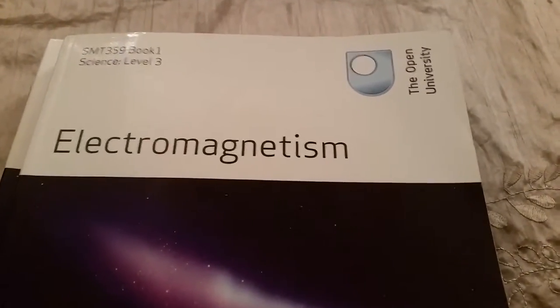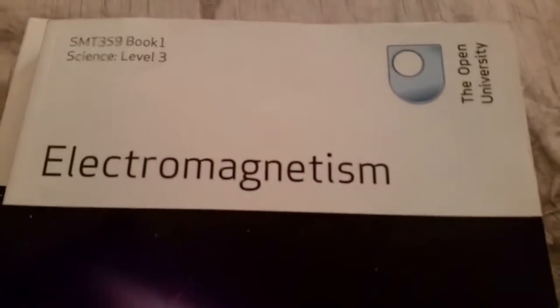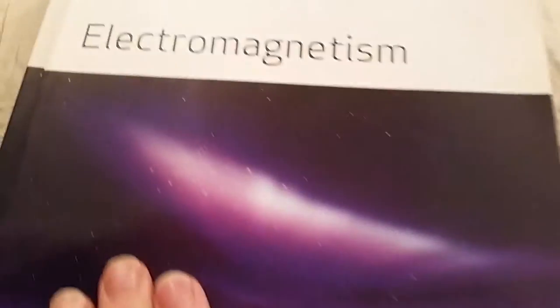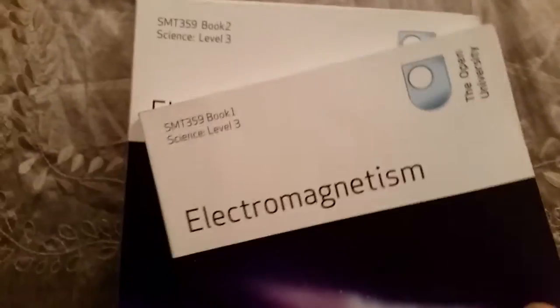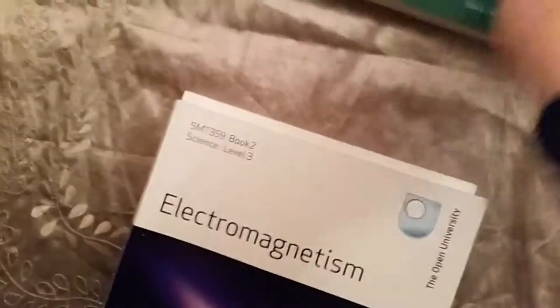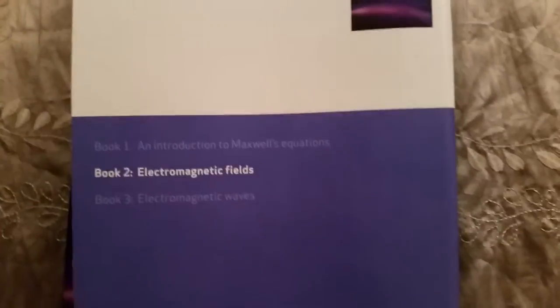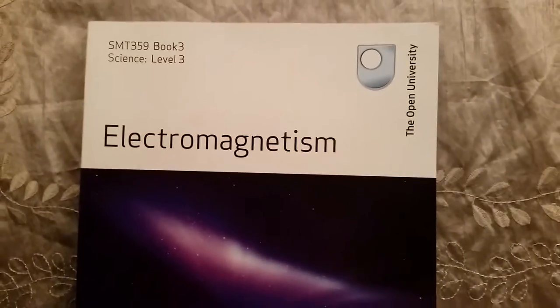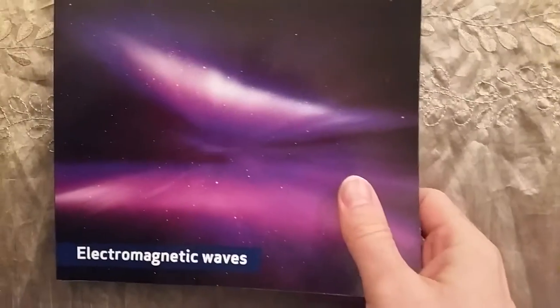This is a brief review of SMT359, which is the electromagnetism course at the OU. It comes with three books. The first book is part one, which is an introduction to Maxwell's equations. Then we have electromagnetic fields, that's book two, and the final book is electromagnetic waves.